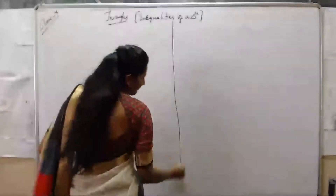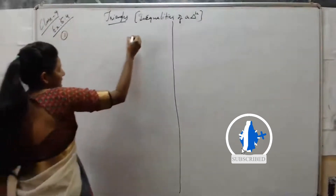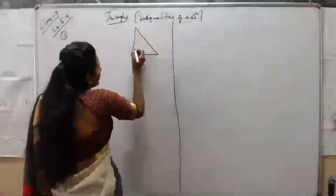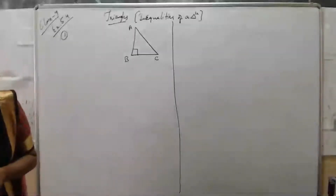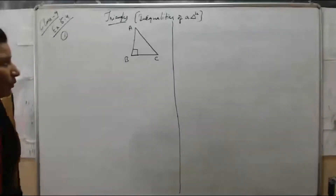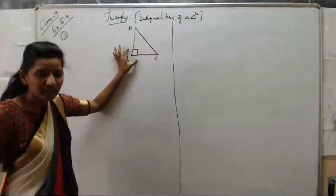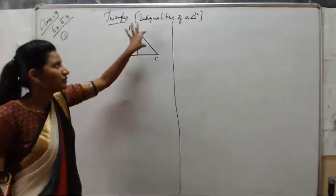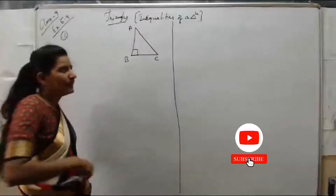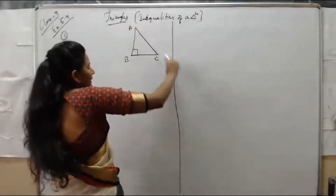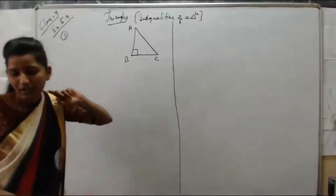Exercise 5.4, first question. This is the right angle triangle — it has 90 degrees. Which is the greatest angle here? If this is 45 by 45, this will be 90. The angle opposite to AC is the longest side. This is the greater angle. What we have to show is that AC is the longest side.